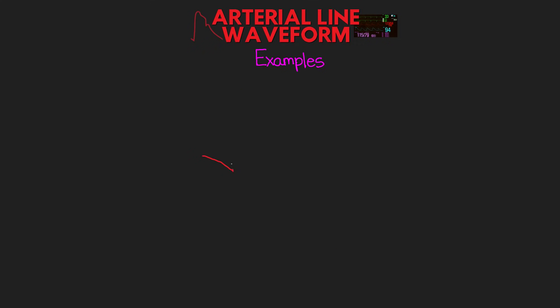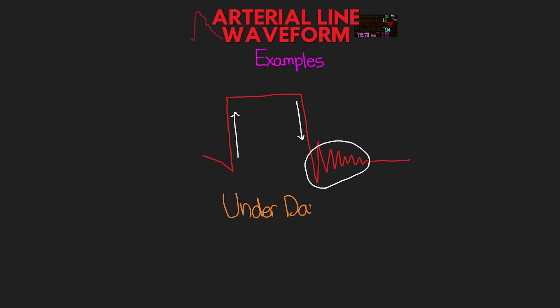Let's look at another example of a square wave test. If you saw this result, what would this be? Hopefully you saw that quick upstroke and quick downstroke, but you saw an exaggerated number of oscillations at the end — this would be an indication of underdamped. Knowing this information, what would you expect to see with your patient's arterial blood pressure tracing? This should tell you that you would see too much energy in the system, thus an exaggerated waveform, giving us that higher systolic and lower diastolic blood pressure.